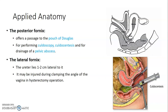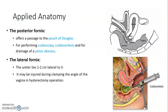The posterior fornix is the largest because when the cervix projects into the vagina, this portion above the cervix forms the fornix. This posterior fornix can be approached through the pouch of Douglas while performing culdoscopy or culdocentesis. If there is pelvic inflammatory disease or any condition causing fluid to accumulate in the pouch of Douglas, you can aspirate fluid through the posterior fornix. The lateral fornices may be injured during clamping of the angle of the vagina.